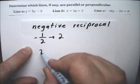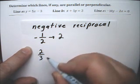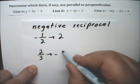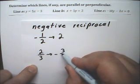If I had two-thirds as the number and I wanted the negative reciprocal, it would be negative three-halves.